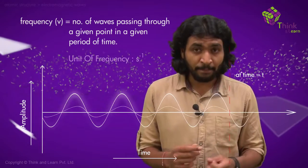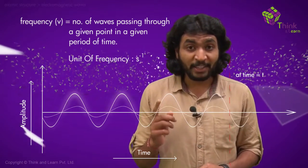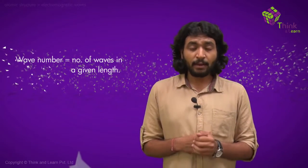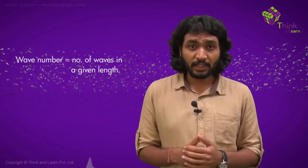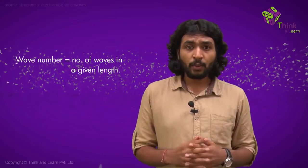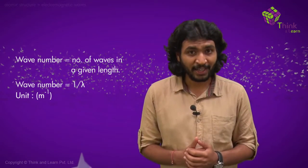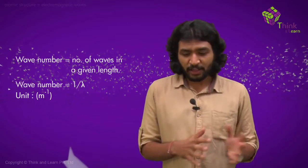Now there's something called the wave number. The wave number is the number of waves that pass through a given length—that is, the number of waves in a given length, which is denoted by one by lambda. The unit is meter power minus one. Now that you know the basic characteristics of a wave, let's go into the characteristics of an electromagnetic wave.